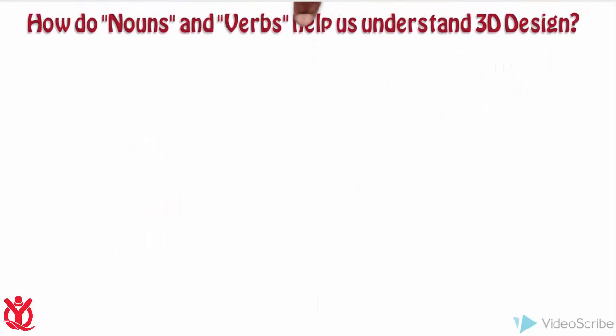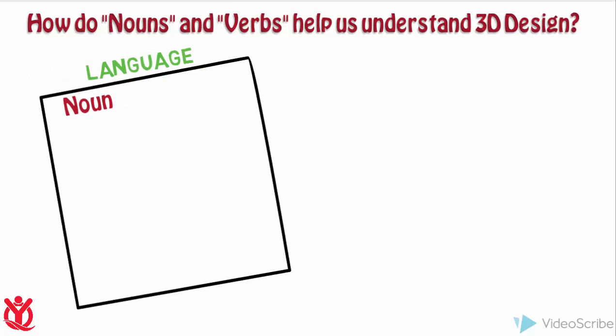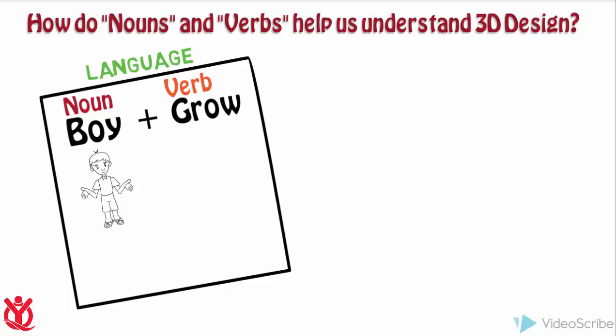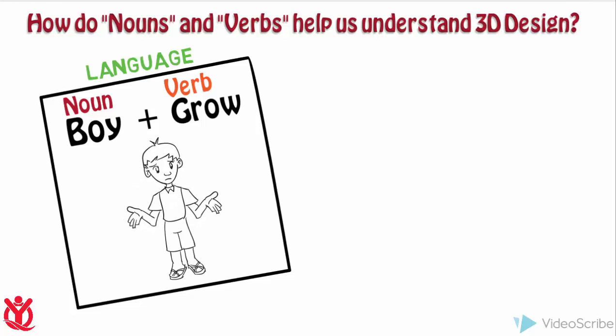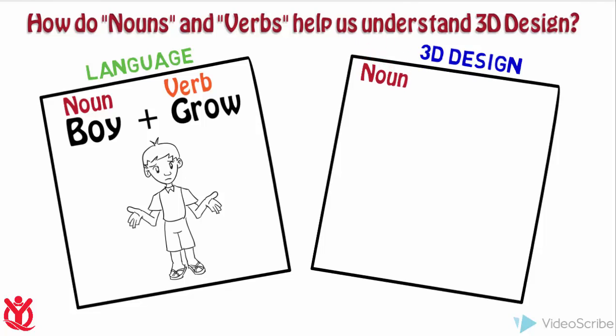How do nouns and verbs help us understand 3D design? To learn your first language, you use simple words called nouns to describe things like boy. Then you combine those nouns with action words called verbs like grow to make simple sentences like boy grows. We apply this same noun and verb approach to learning Moment of Inspiration. We learn to create nouns like circle. Then we add action words or verbs like scale to modify those nouns.